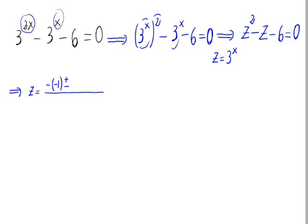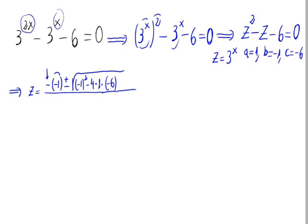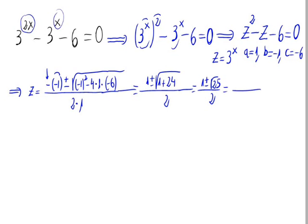Solving this — the coefficients of this equation are a=1, b=minus 1, and c=minus 6. The quadratic formula gives us minus b, which is minus minus 1, plus or minus the square root of b squared — that's minus 1 squared — minus 4 times a, which is 1, times c, which is minus 6, all divided by 2 times a, which is 2 times 1. Operating: minus minus 1 is plus 1, plus or minus the square root of 1 plus 24, divided by 2. That is 1 plus or minus the square root of 25, divided by 2, which equals 1 plus or minus 5, divided by 2. We have two different solutions, one with the plus and one with the minus.